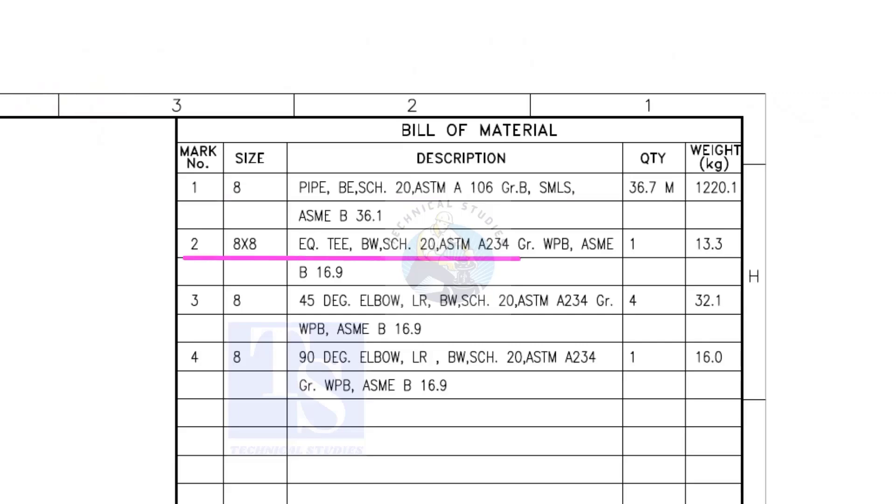Item number 2 is an equal T, bevel end, schedule 20. What is WPB? W means weldable, P means pressure, B is grade B, refers to the minimum yield strength.